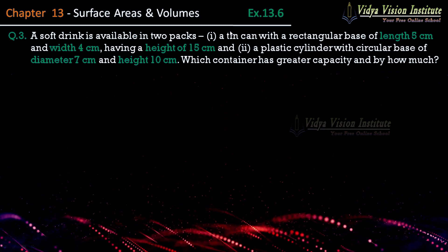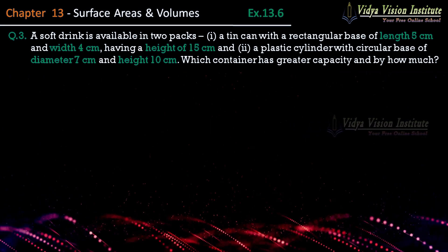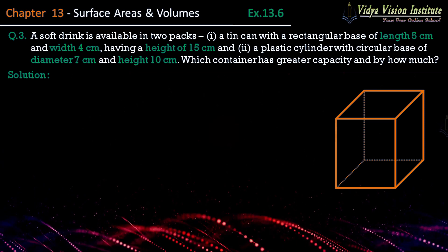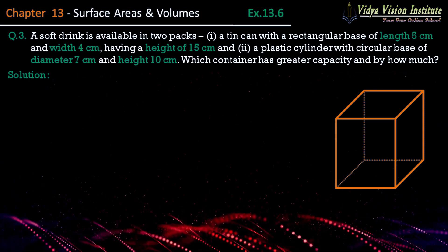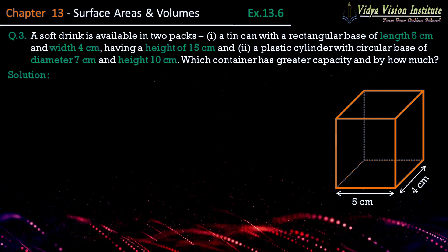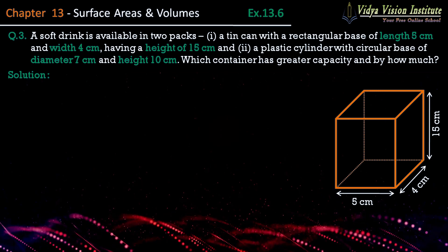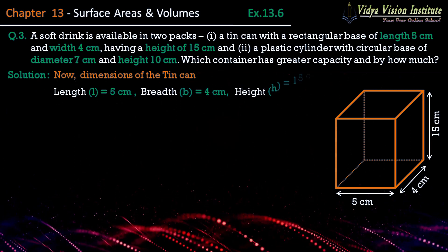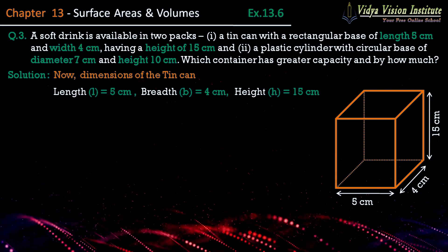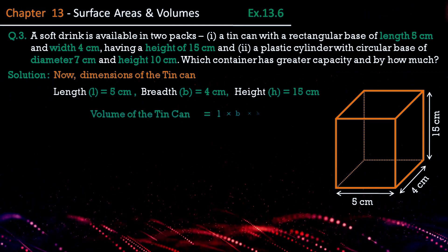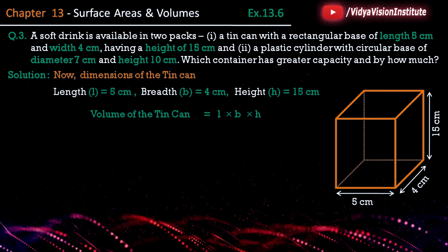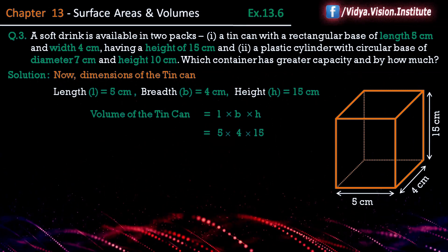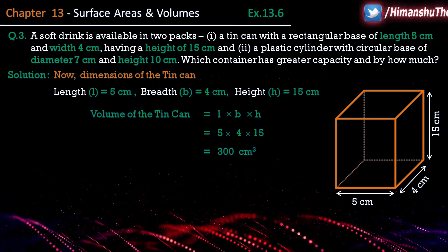सबसे पहले हम tin can का — जो कि cuboidal shape में है — इसका volume निकालेंगे। Dimensions of the tin can: length l = 5 cm, breadth b = 4 cm, and height h = 15 cm. Volume of the tin can = l × b × h = 5 × 4 × 15 = 300 cm³.